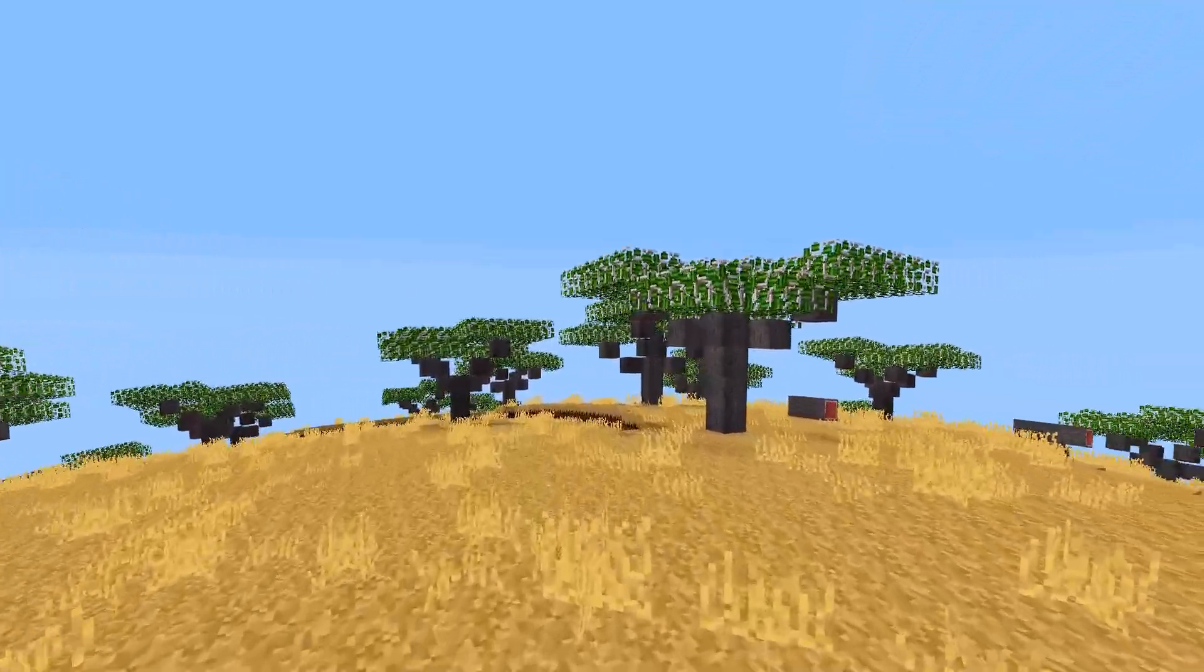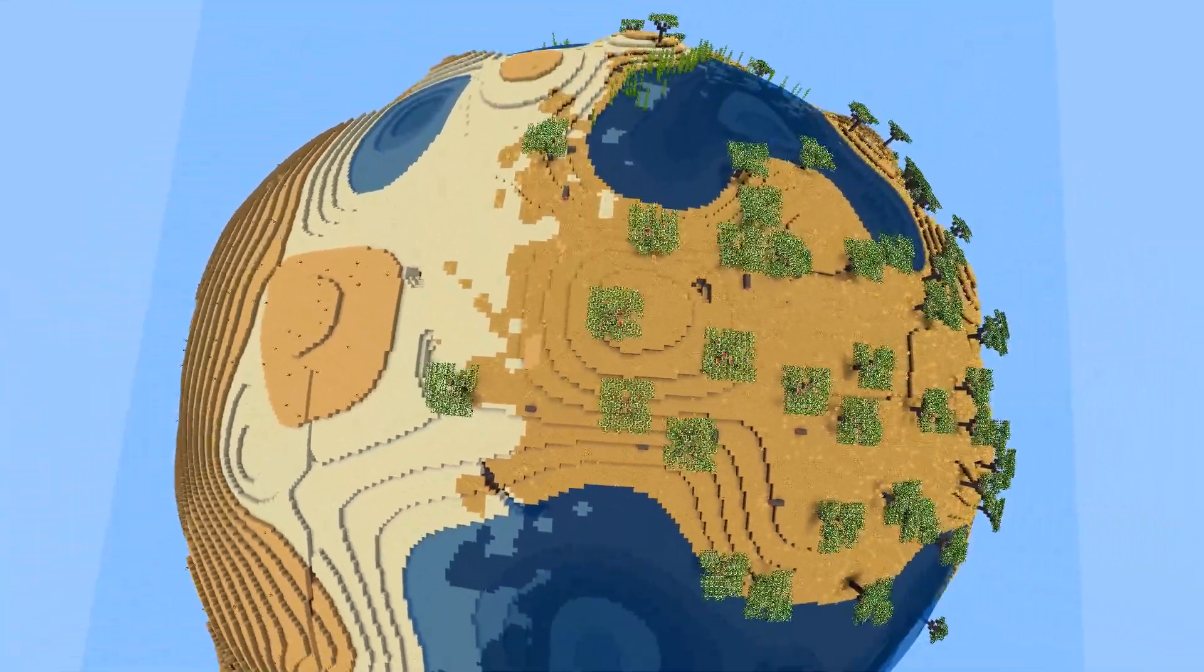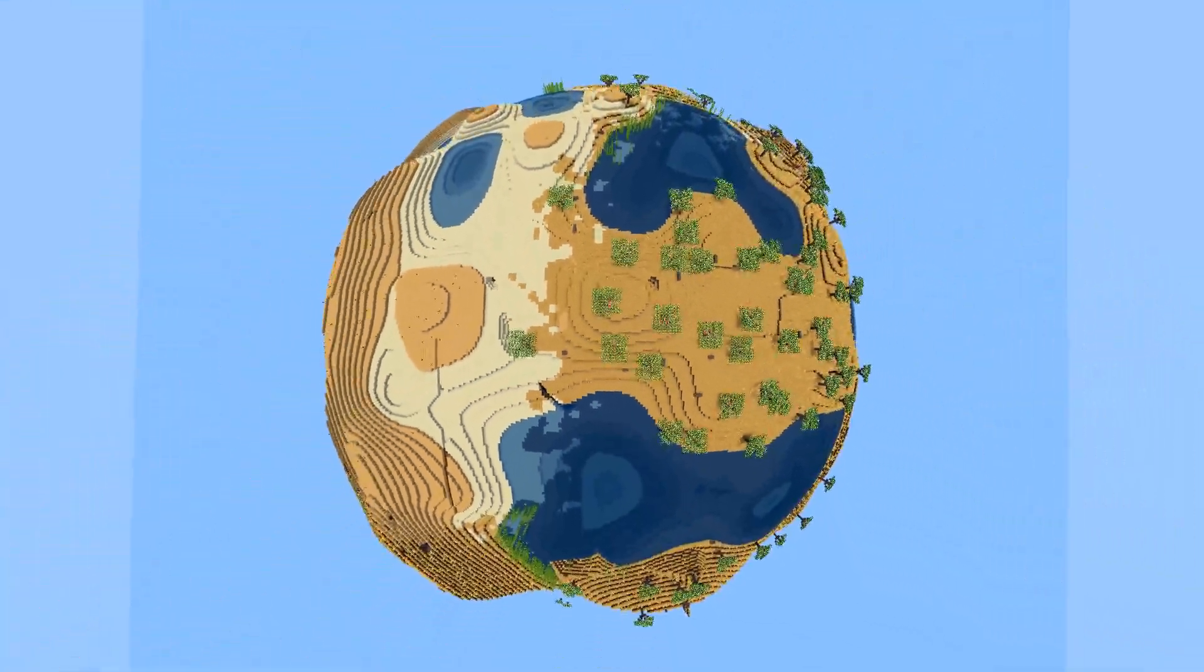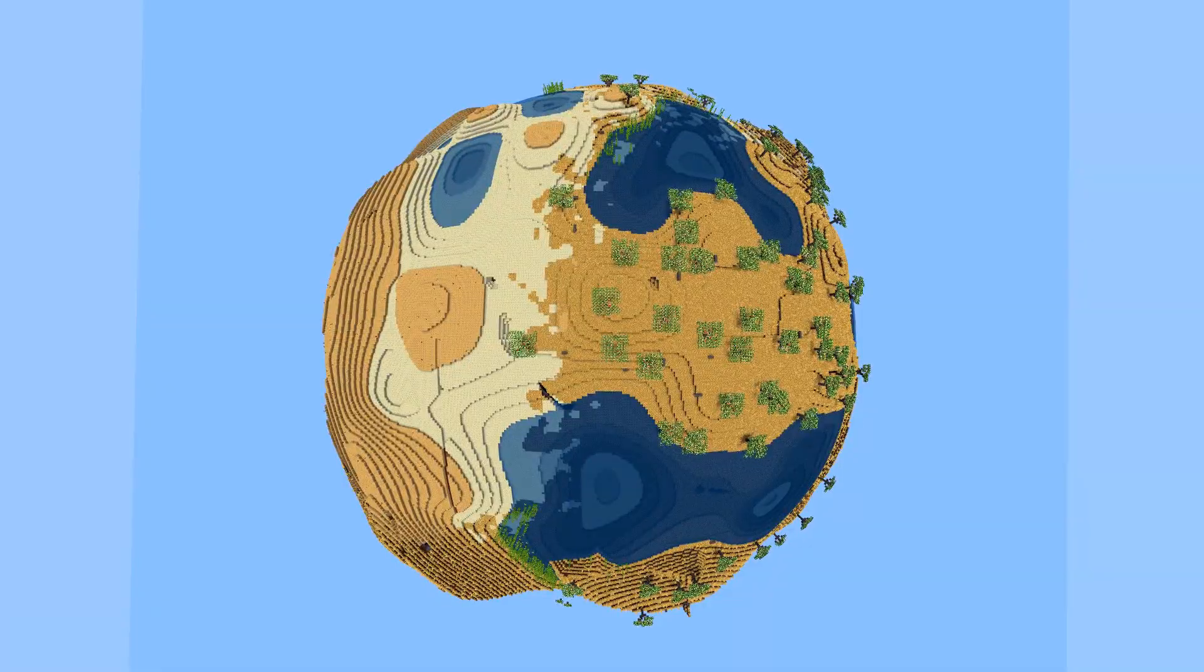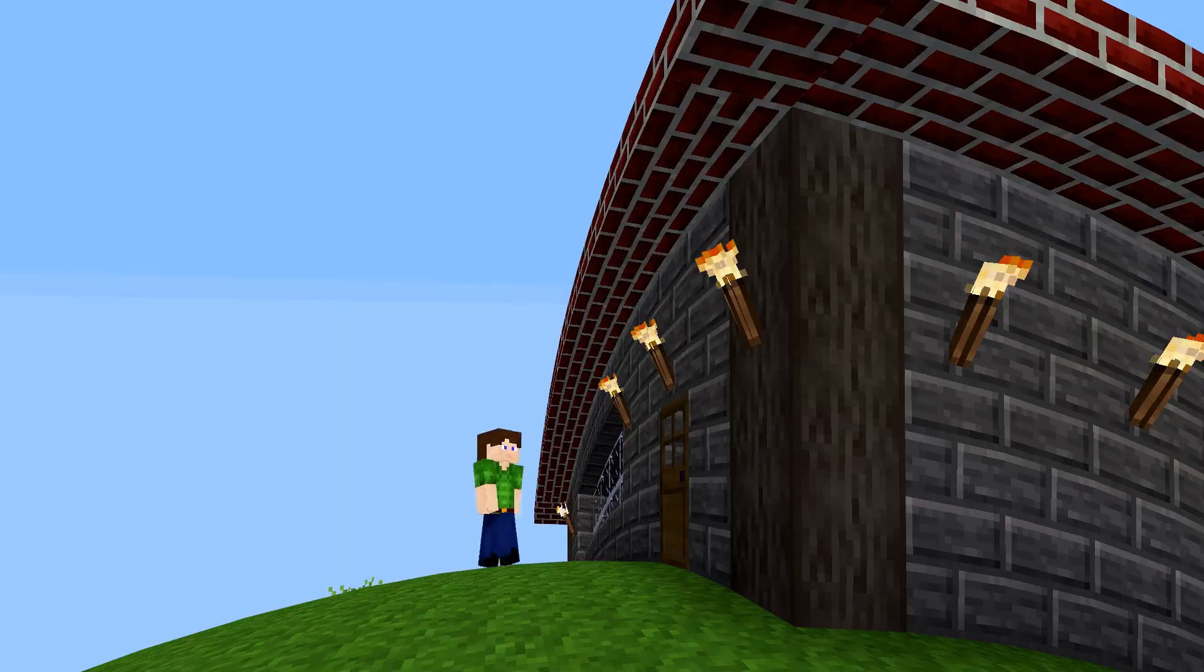In this game, you can create planets so large that you barely even notice any curvature unless you look at them from far above. Or the planet can be so small that other players can easily hide behind its curvature.